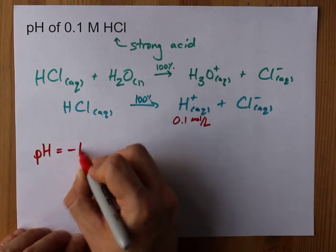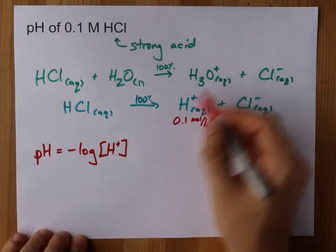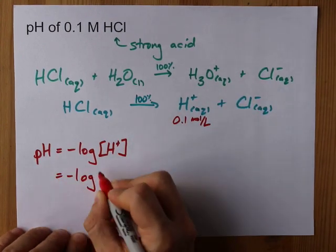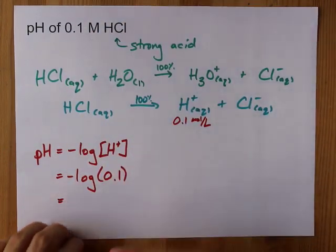The pH, if you know your formula, is the negative log of your H+ concentration or H3O+ concentration. It's just the negative log of whatever your original concentration was, in this case 0.1.